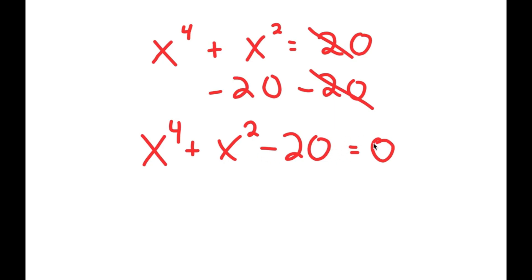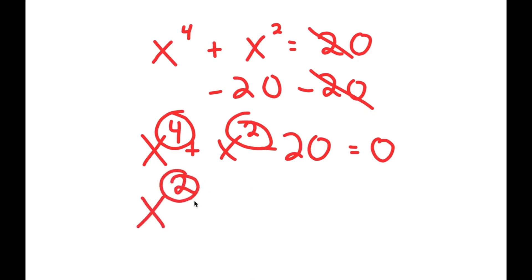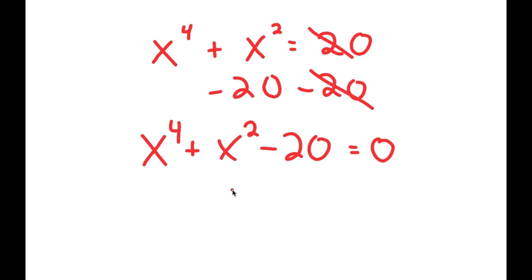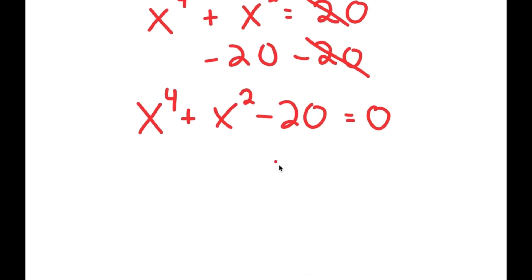This may seem like a quadratic equation, but it's not, because we have the power of 4 as our primary term, followed by the power of 2. In a normal quadratic equation, we have 2 as our primary, then just 1, then some constant c. So we can't factor this using the quadratic formula directly because this is not a quadratic equation.